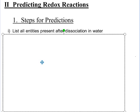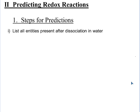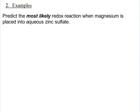The first thing you're going to do is you're going to list all the entities, that means things, that are present after dissociation in a water environment. So we're going to go through a question as we're going through the steps so you can see what I mean by that. Here is an example that says, predict the most likely redox reaction when magnesium is placed into aqueous zinc sulfate. So I want to know whether there is actually a reaction with magnesium and zinc sulfate.